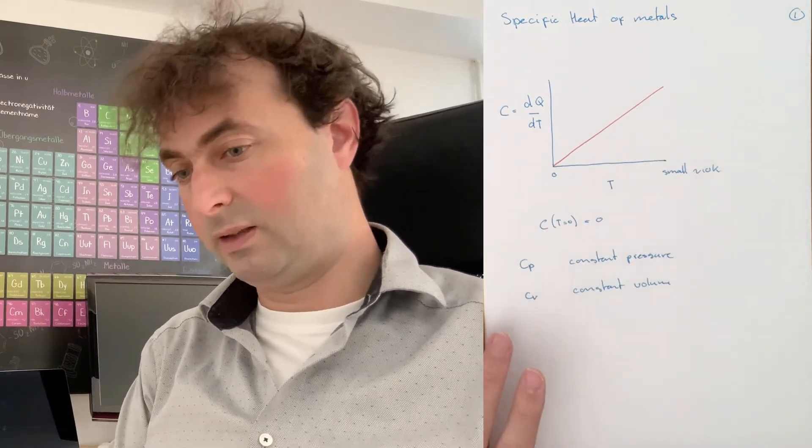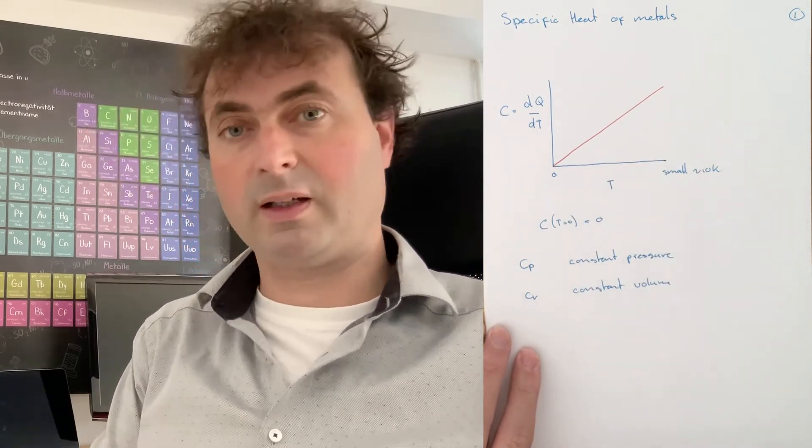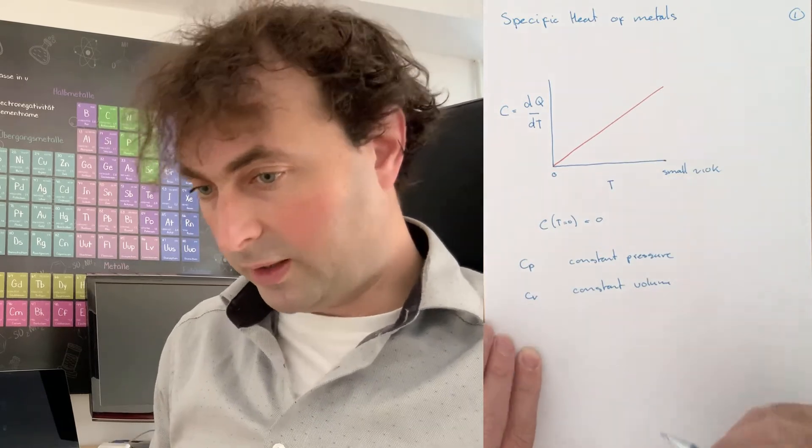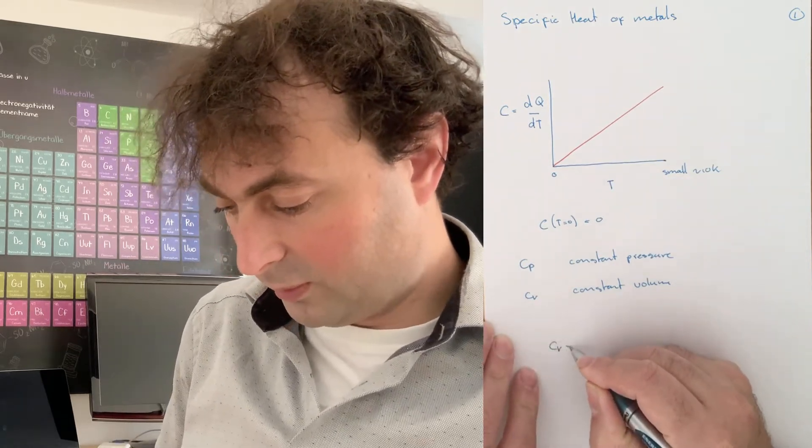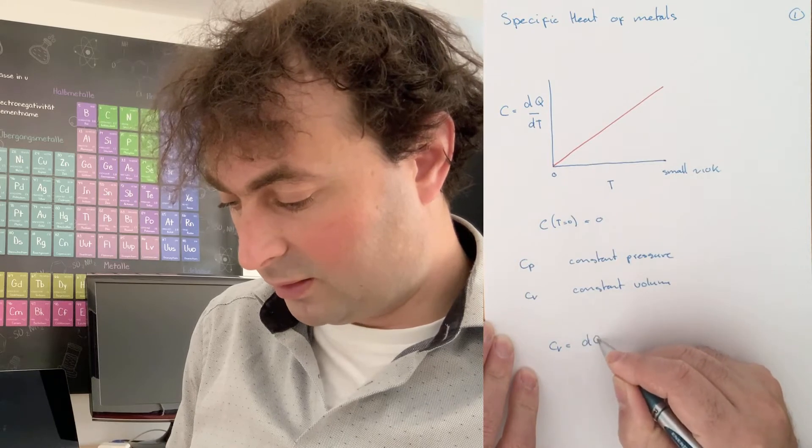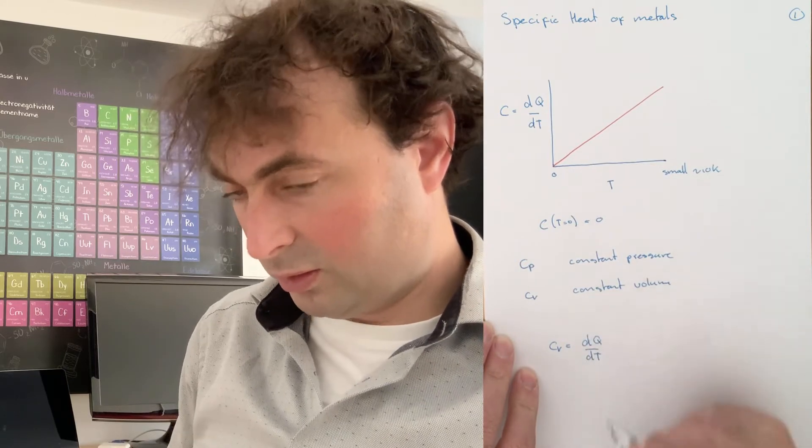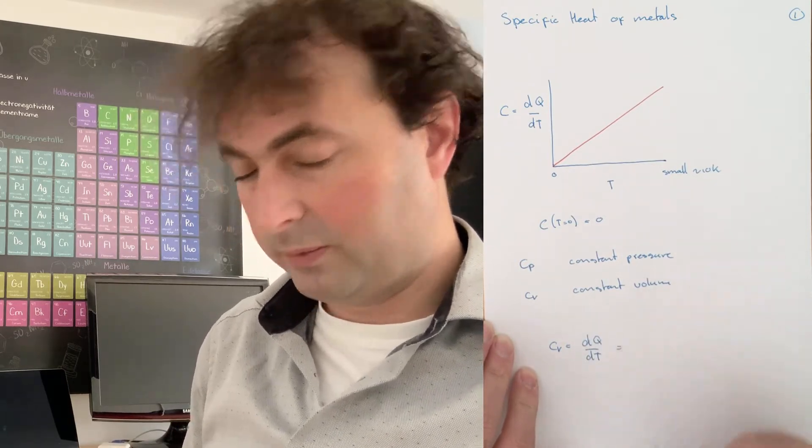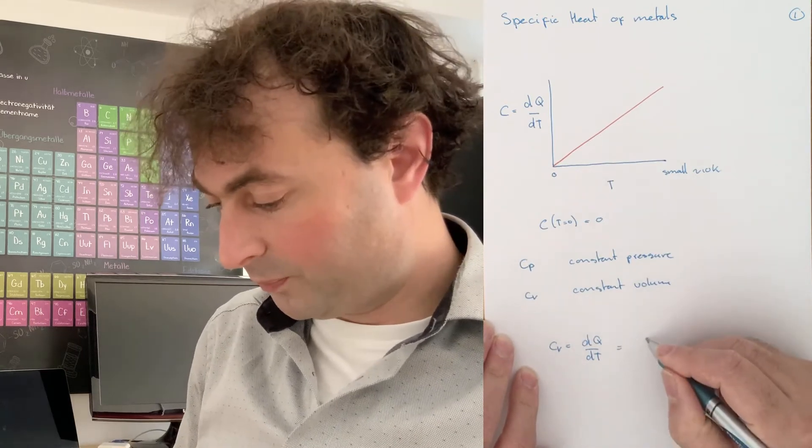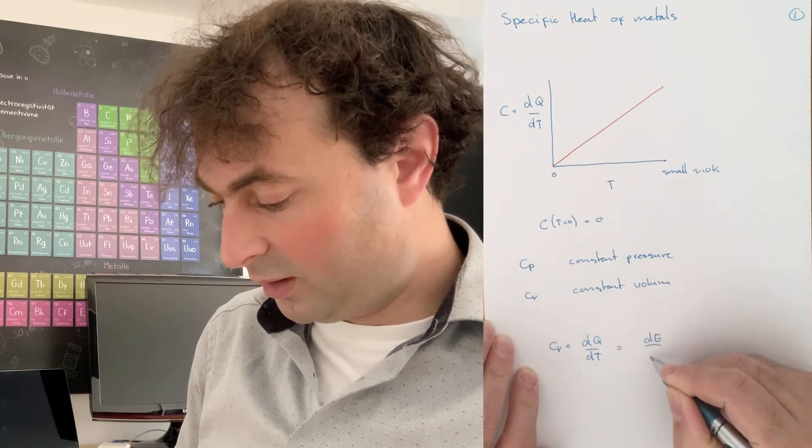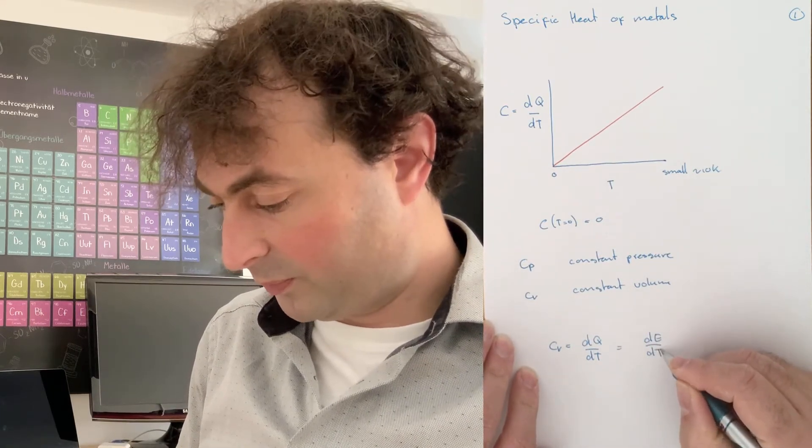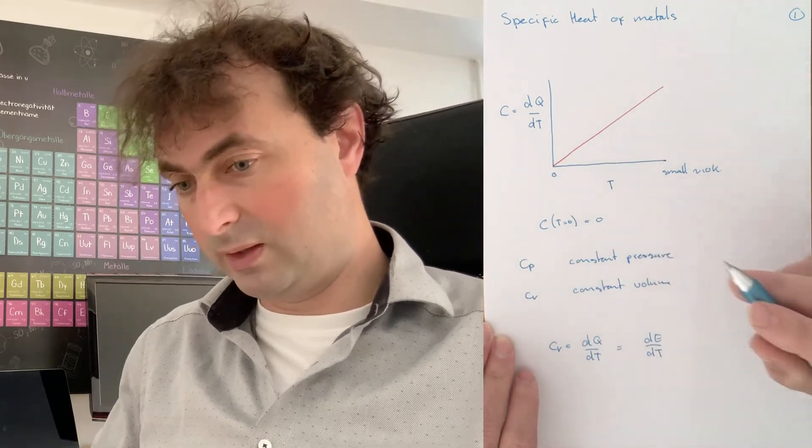Let's have a look at the specific heat at constant volume. At constant volume we can basically say that the amount of heat that you have to apply to change the temperature is equal to the internal energy of our sample as a change of temperature, so dE/dT.